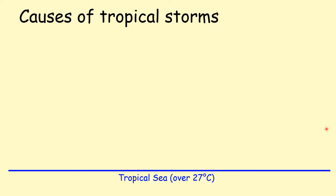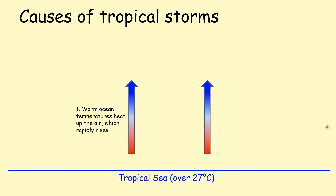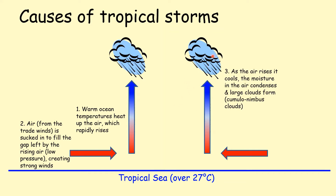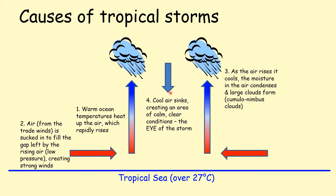Causes of tropical storms: they all start over warm tropical seas that are over 27 degrees centigrade. Because the sea is so warm, the air above it will rise, and this rising air will leave a gap beneath it that sucks in wind from the trade winds. As the air rises it cools and condenses, forming storm clouds, and then this cool air sinks in the center of the tropical storm to form the eye of the storm.